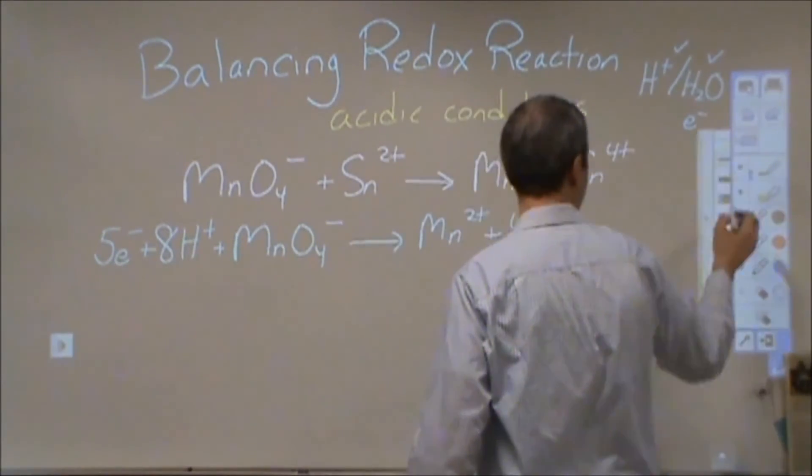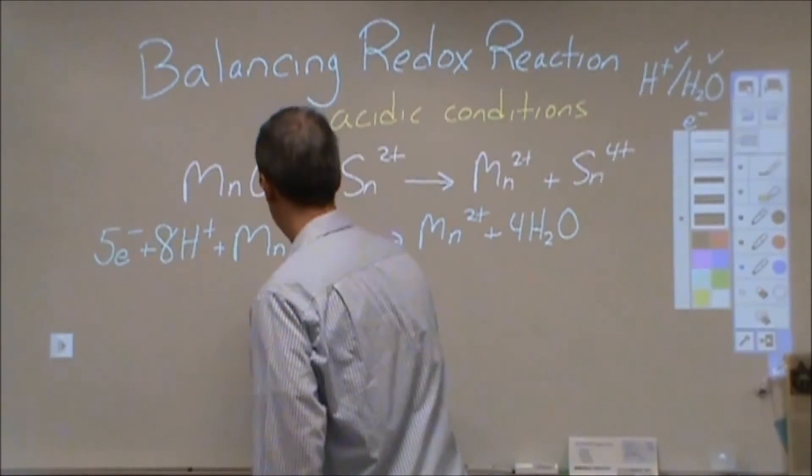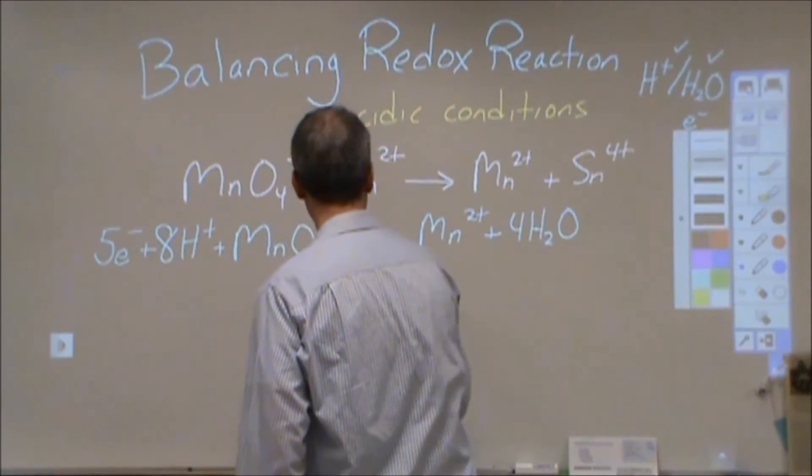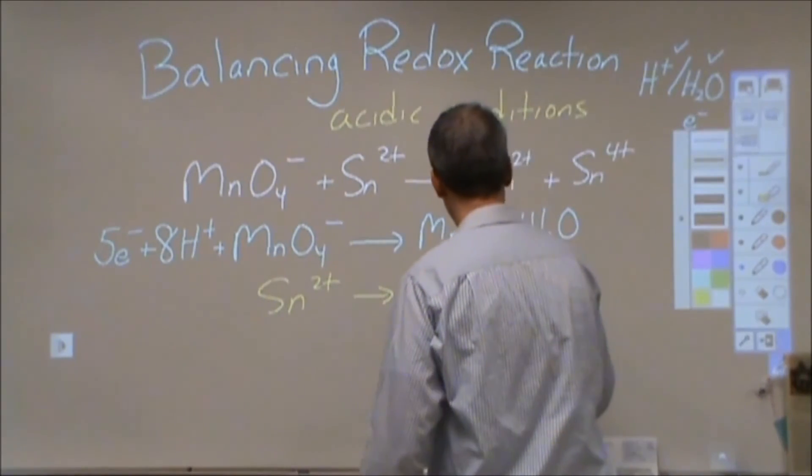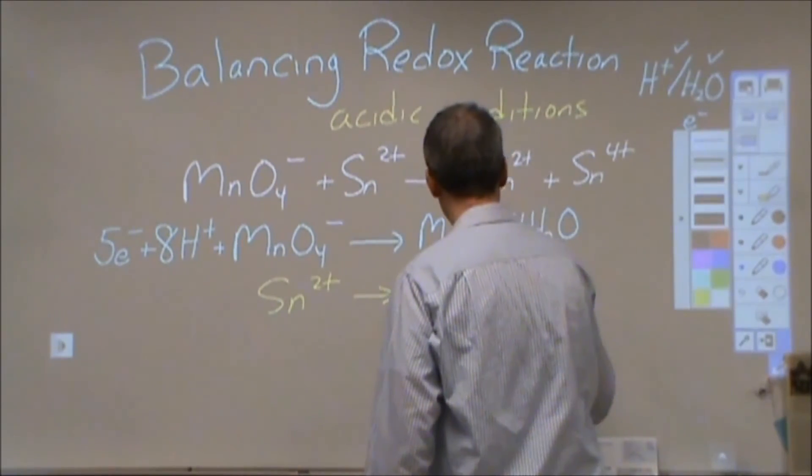The Sn2+ on the other hand, turning into Sn4+, is really simple to balance. We're just going to add two electrons here, and that's all we need.